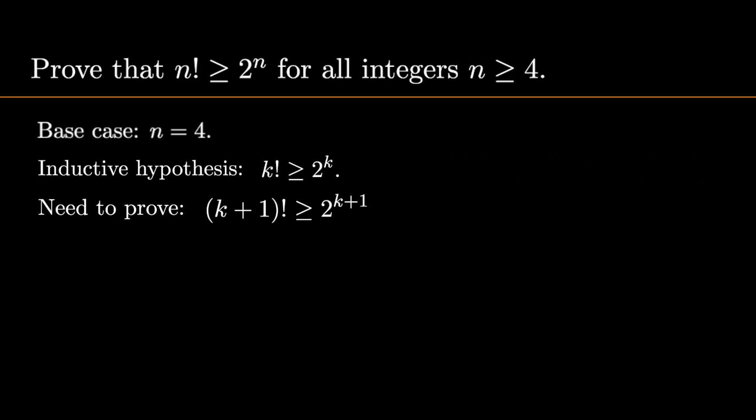So starting from the assumption, we now know that k plus 1 factorial is greater than or equal to 2 to the power of k times k plus 1.